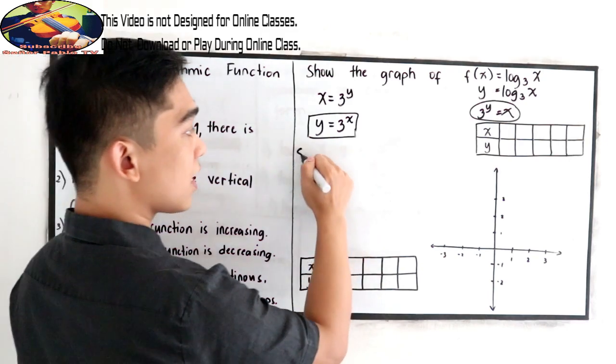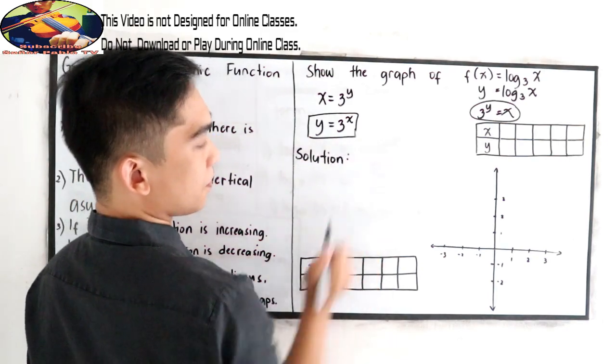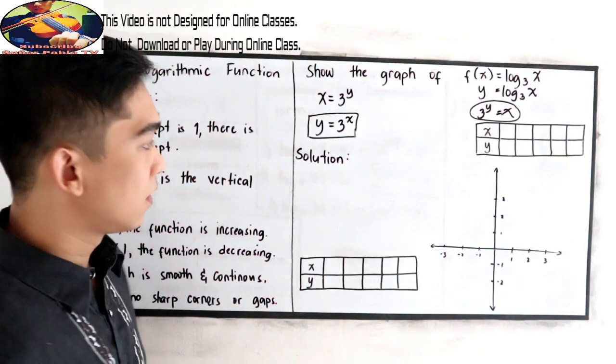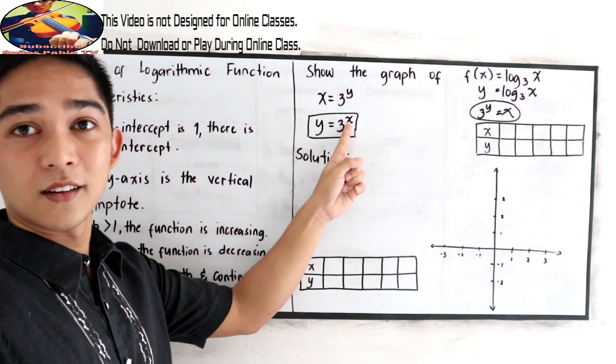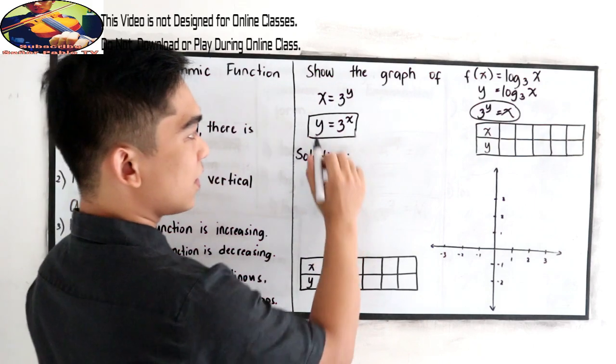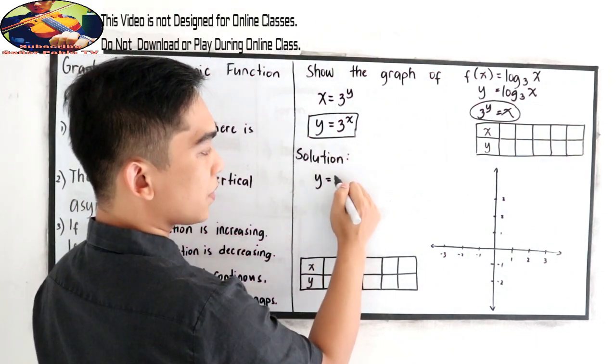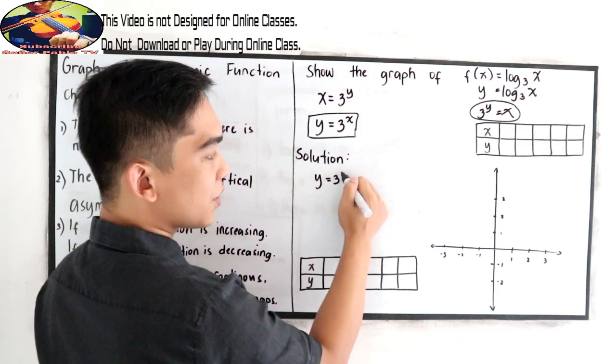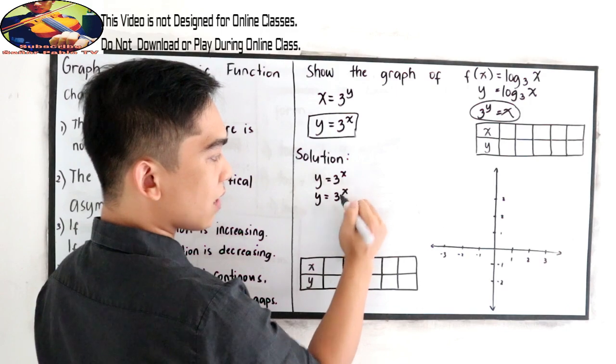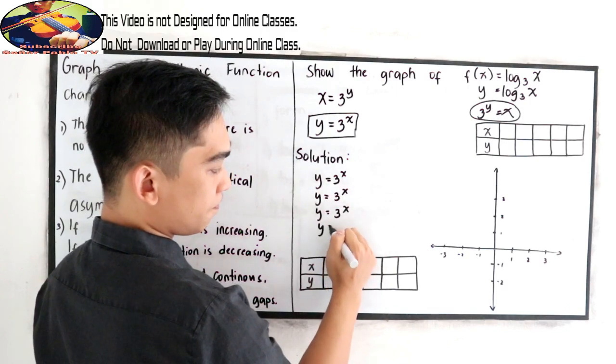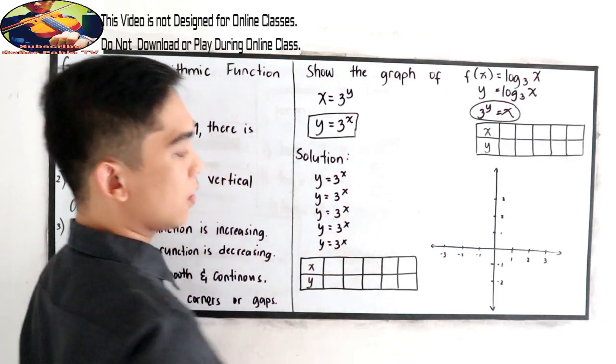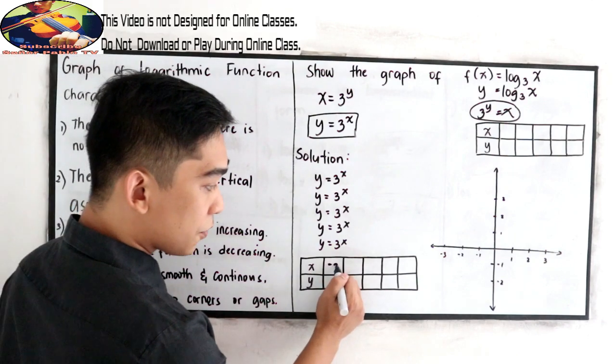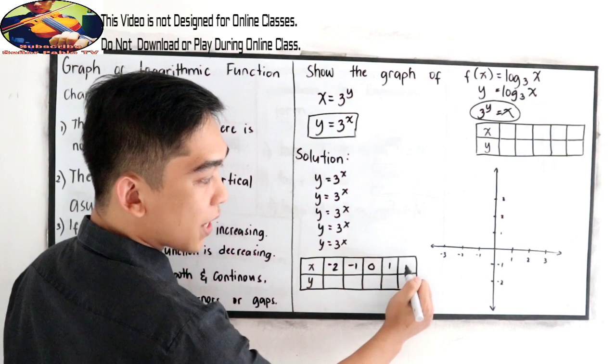Now let's find our table of values. So y is equal to 3 raised to x. We're going to assign the value for x to get our y. Let's find 5 different numbers. We're going to set the value for our x. So let's say our values are negative 2, negative 1, 0, 1, and 2.